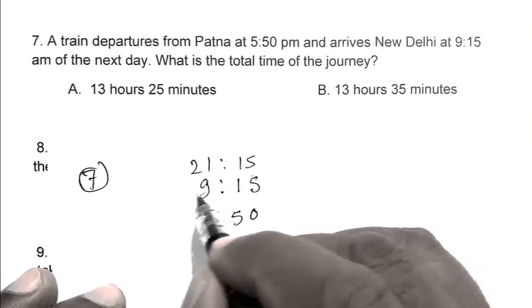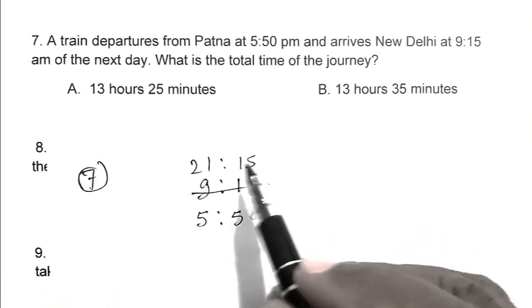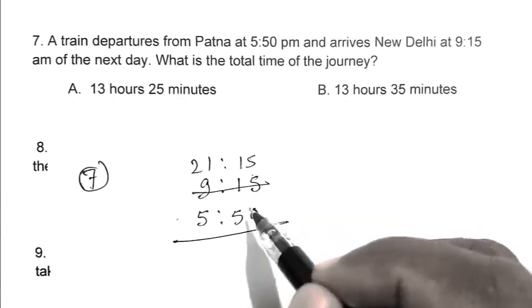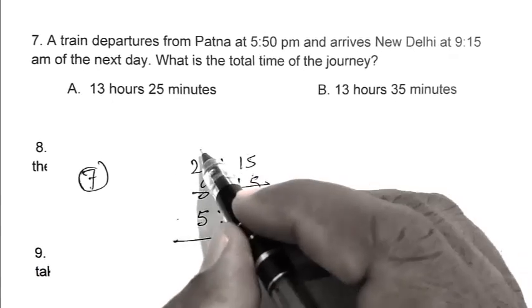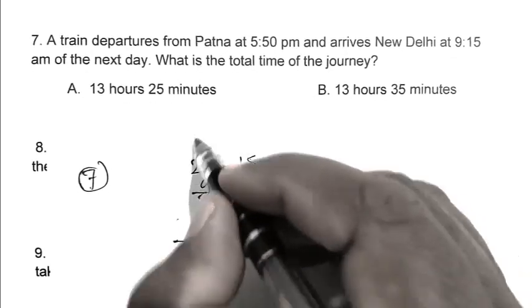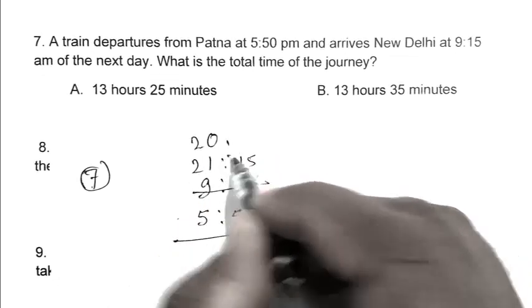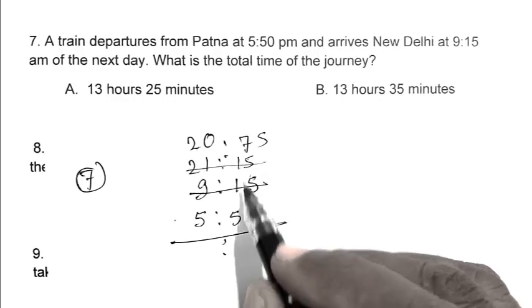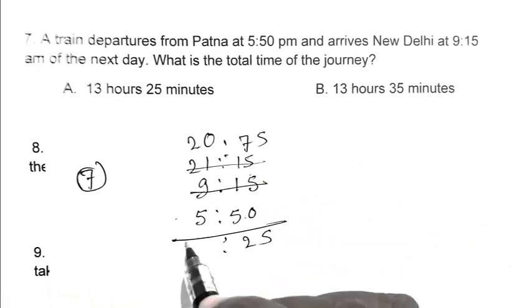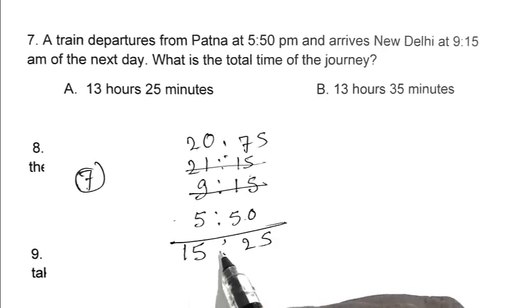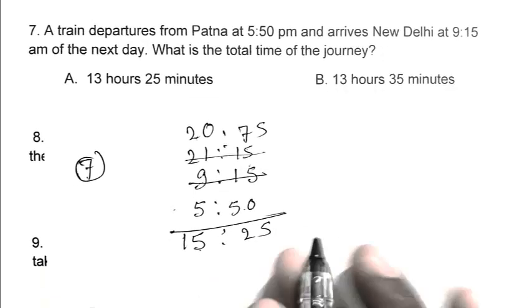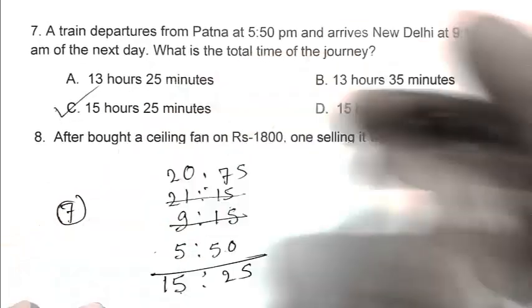So it becomes 21:15 hours. If we subtract it, here 15 is less than 50, so we have to transfer 1 hour to minute side. So it becomes 20 hours 75 minutes. After that, we subtract it, we get 15 hours 25 minutes. So my answer is 15 hours 25 minutes. So C is the right answer.